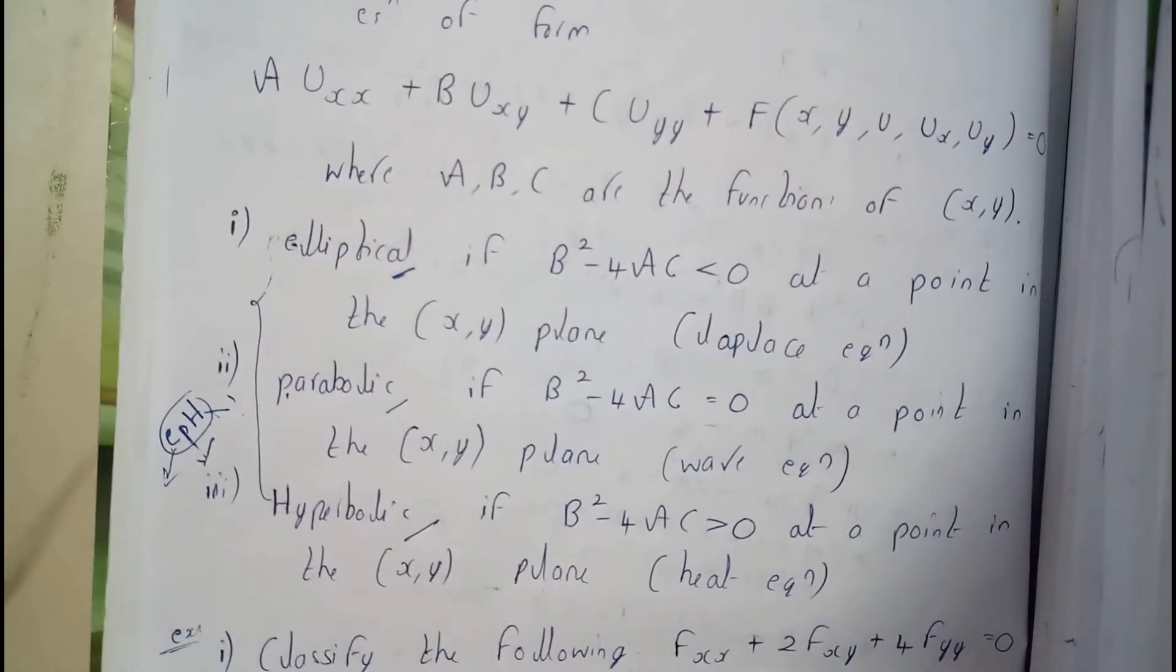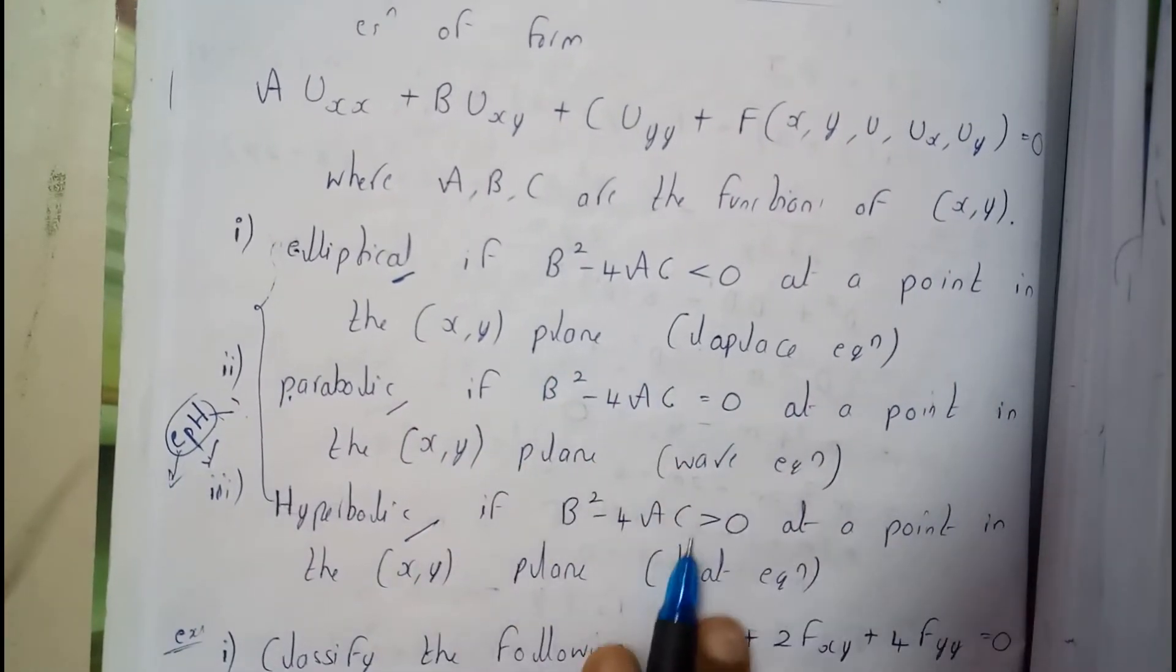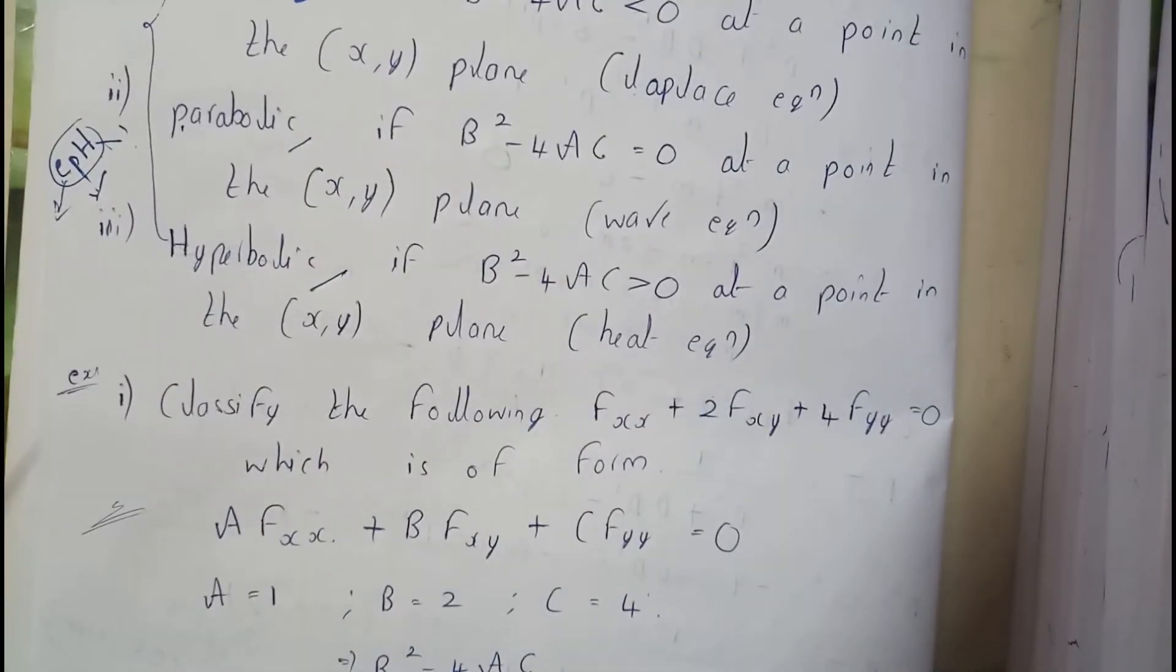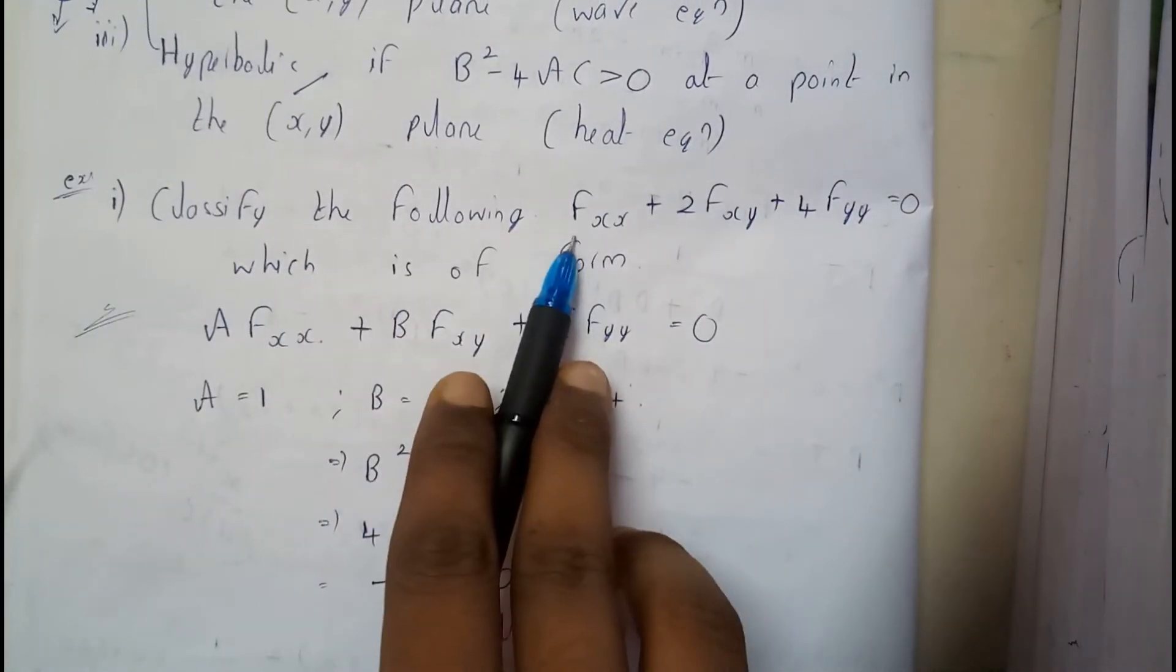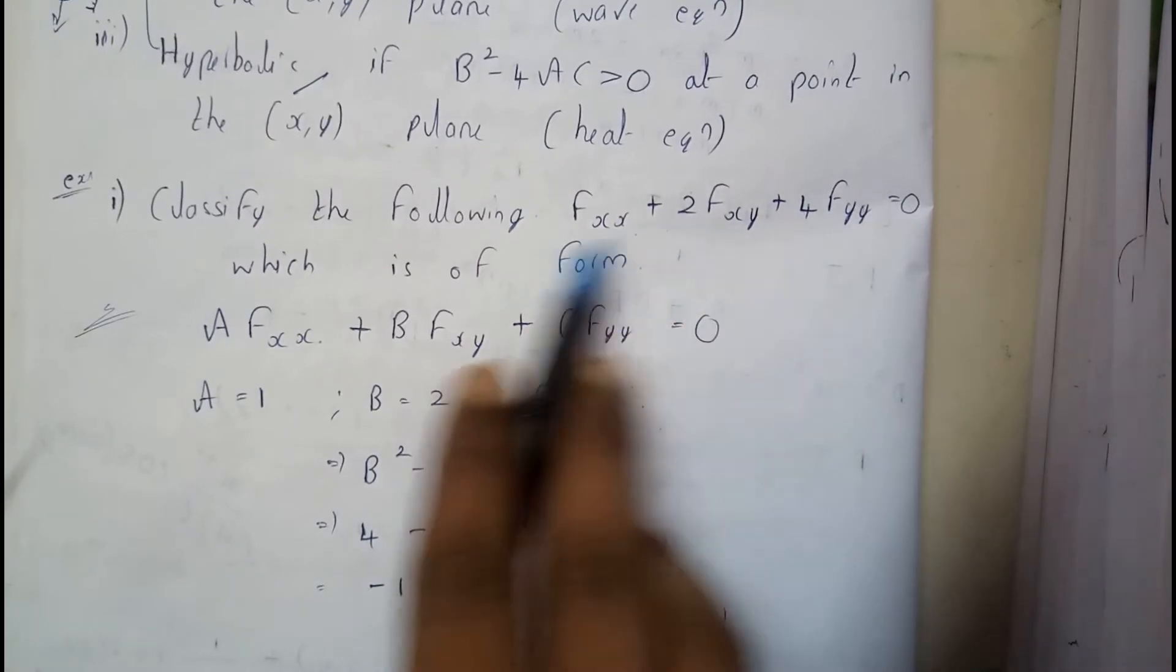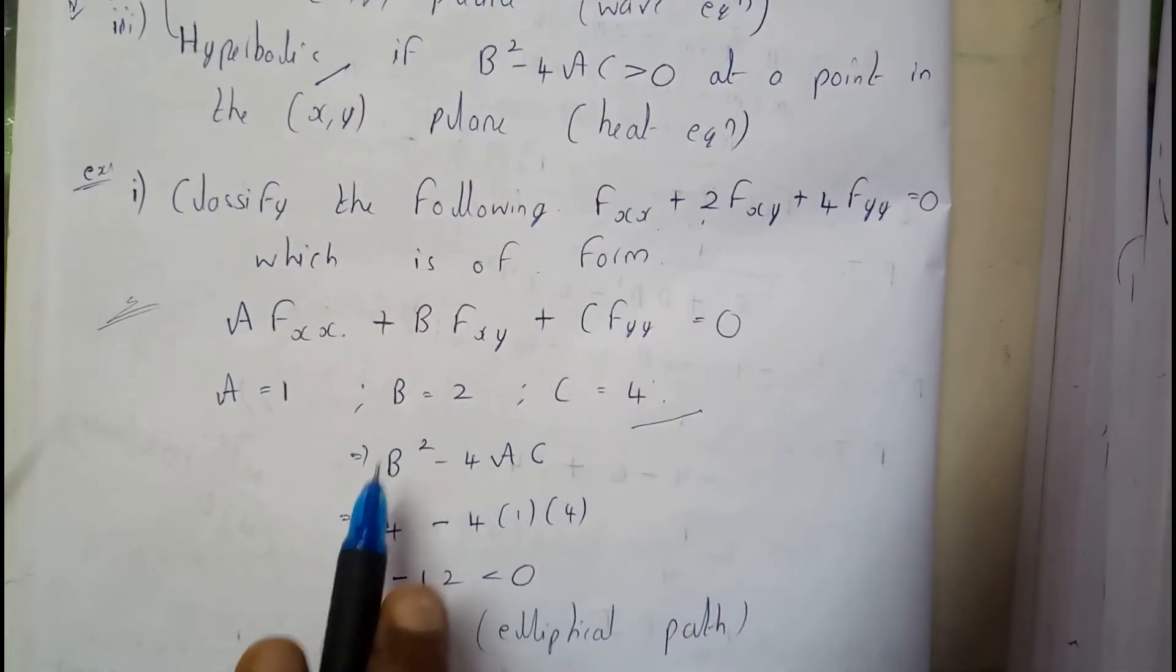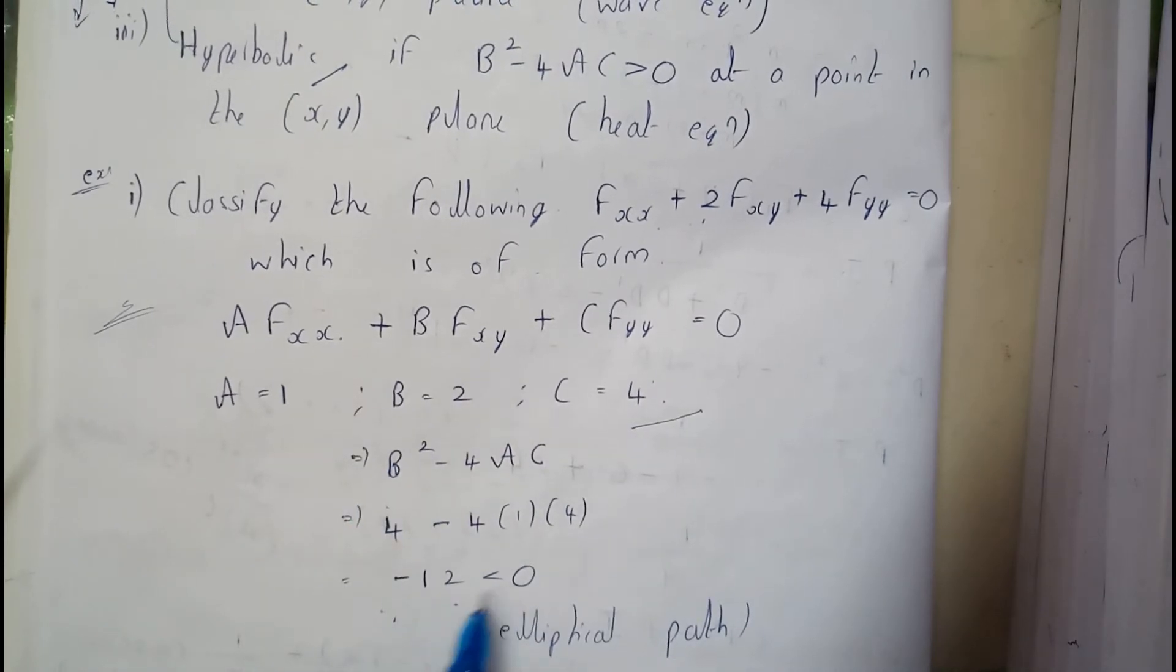These correspond to Laplace equation, wave equation, and heat equation (LWH). Let's go through three problems. The first equation is fxx + 2fxy + 4fyy, where A = 1, B = 2, C = 4. Substituting into B² - 4AC, we get -12, which is less than zero, so it's an elliptical path.